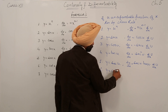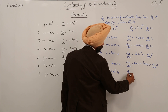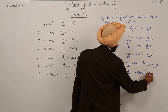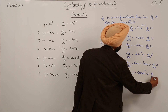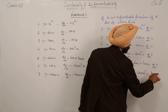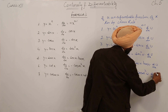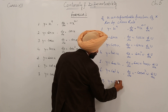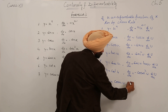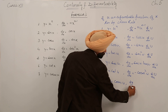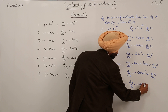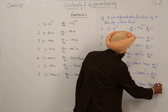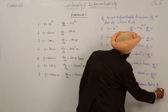y is equal to cot u. dy/dx is equal to minus cosecant squared u, into d/dx of u. And the last: y is equal to cosecant u. dy/dx is equal to minus cosecant u times cot u, into d/dx of u.